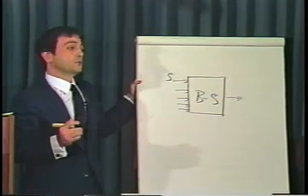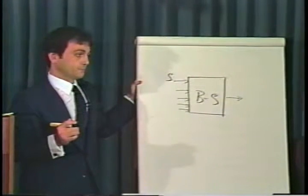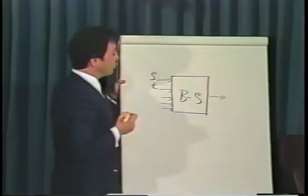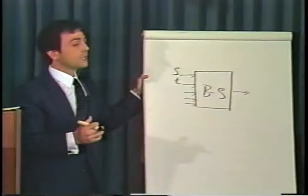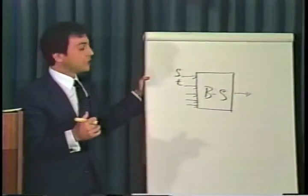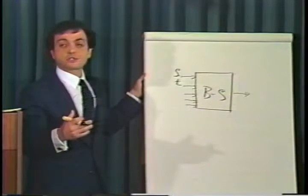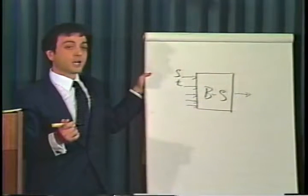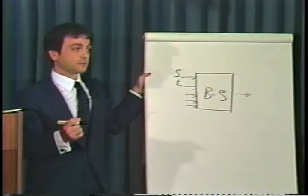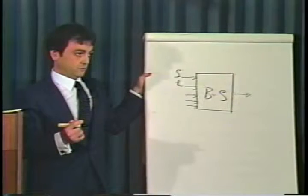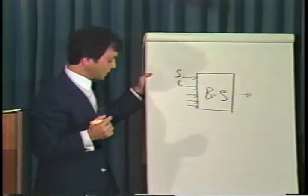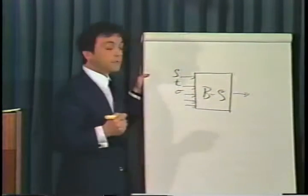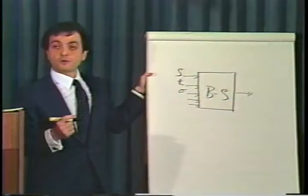What are the other inputs? Time to expiration — time to maturity — denoted by little t. In some formulae it will be denoted as big T, but T or t are the letters assigned to time to expiration. Volatility is also an input, denoted by the Greek letter sigma, which stands for volatility. Let me first finish all the inputs and then go back and talk a little bit more about volatility intuitively.